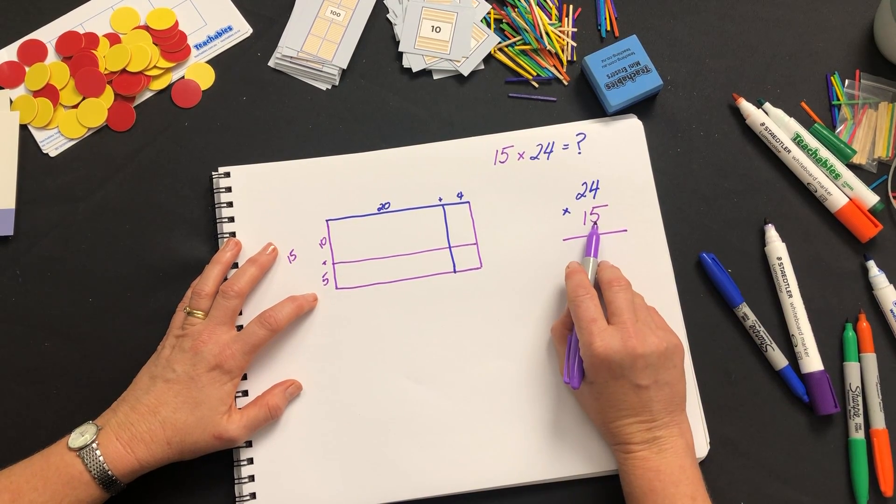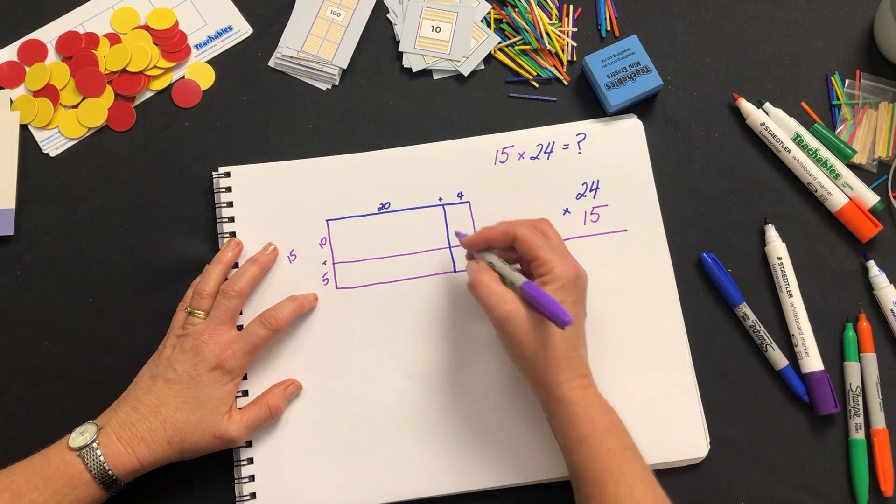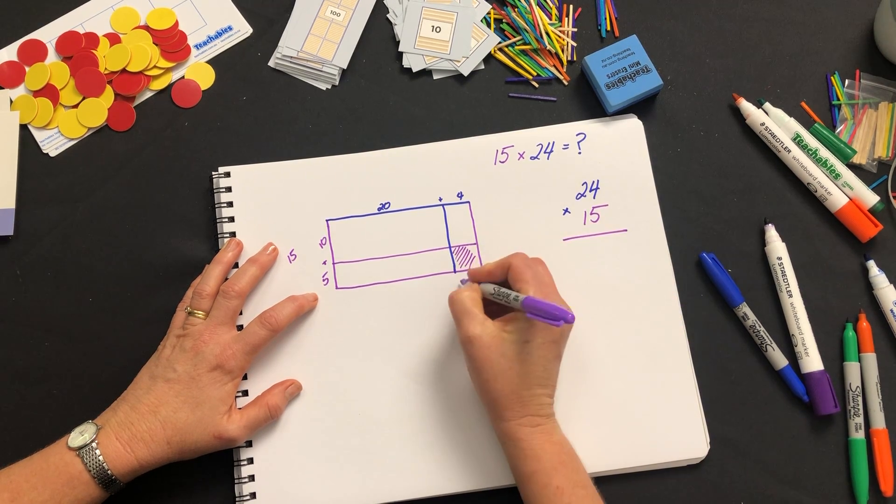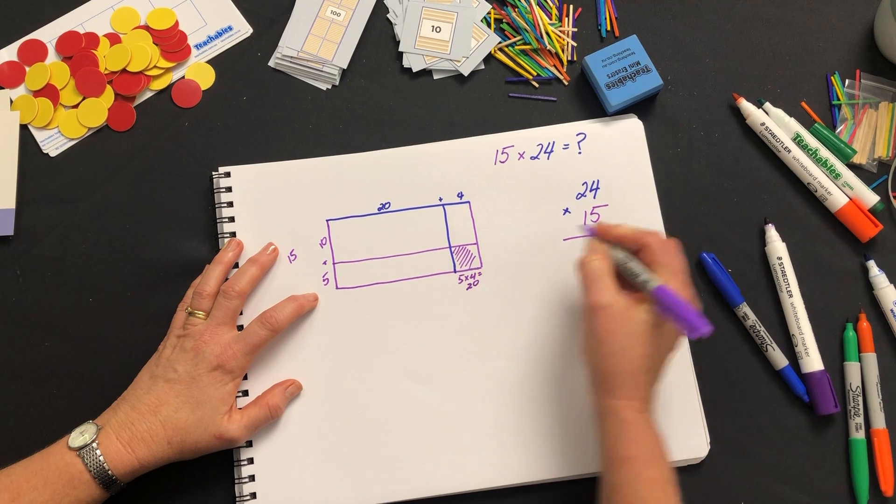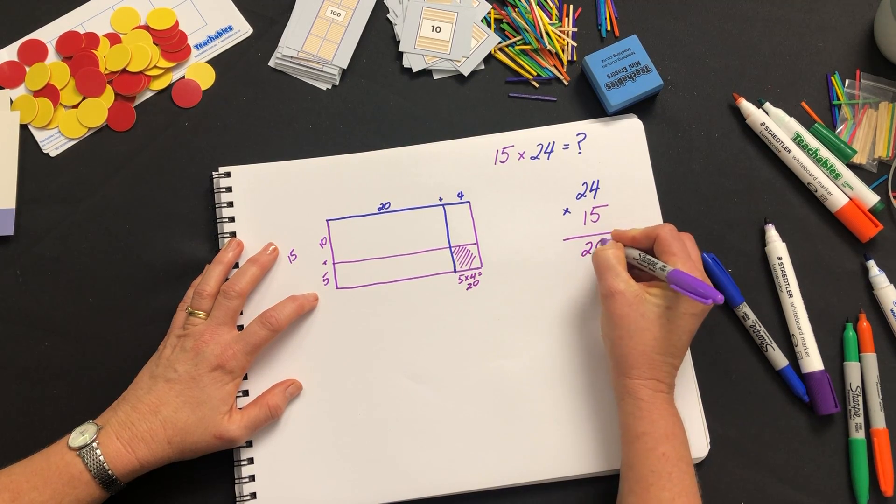But the first multiplication would be 5 times 4 and that's this rectangle right here. 5 times 4 equals 20. So we're going to write that down.